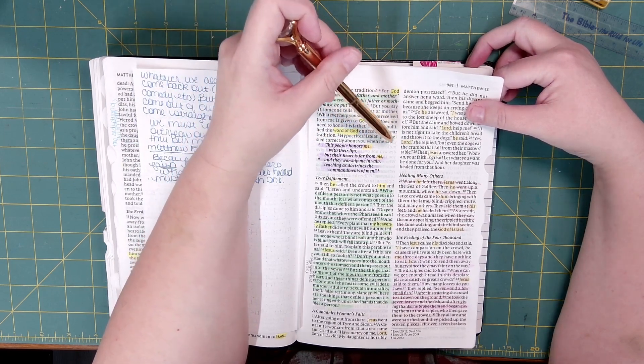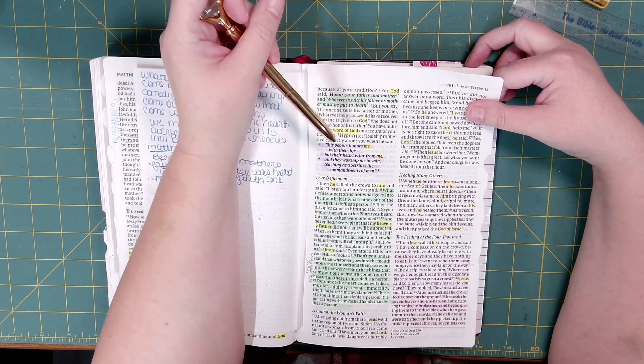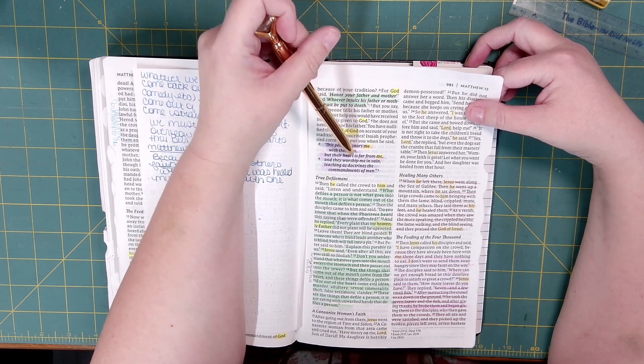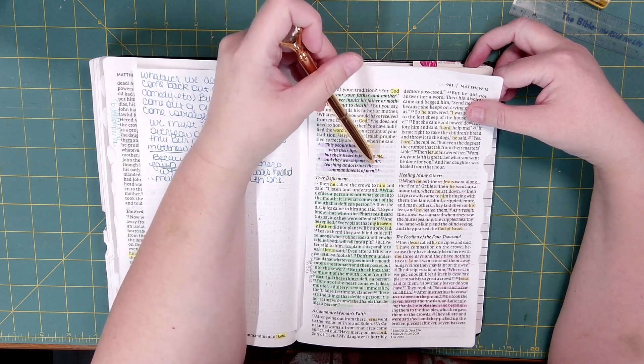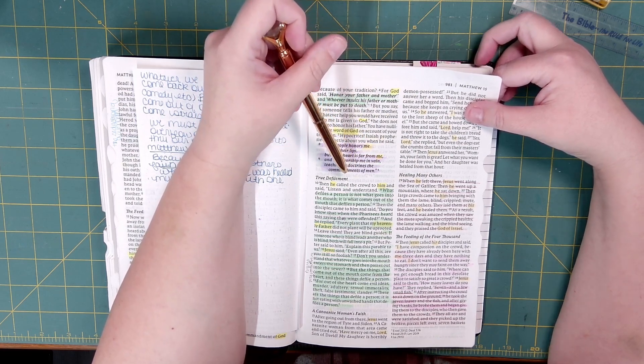Hypocrites! Isaiah prophesied correctly about you when he said, This people honors me with their lips, but their heart is far from me, and they worship me in vain, teaching as doctrines the commandments of men.